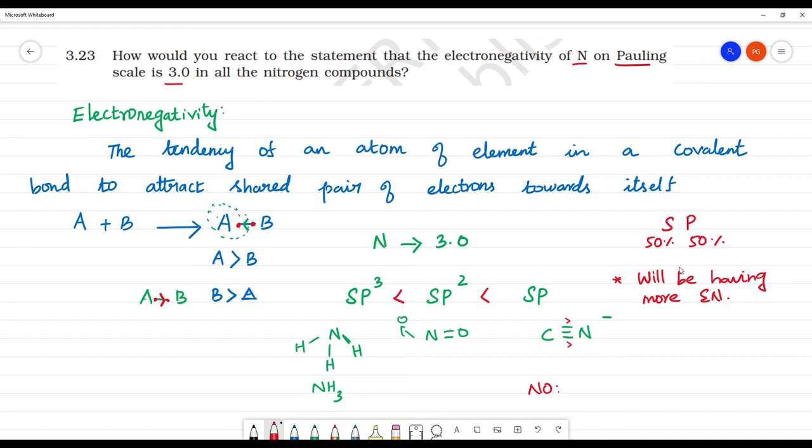If it has sp hybridization, the electronegativity value will be higher. For single bonds it's around 3.0, but for double or triple bonds with more s character, the electronegativity changes. So the statement that nitrogen always has electronegativity 3.0 is incorrect.